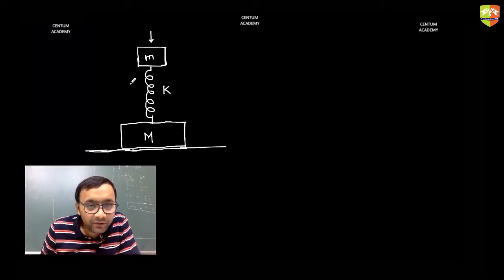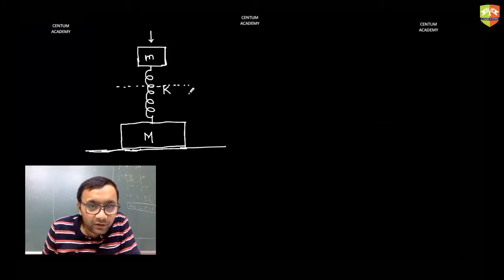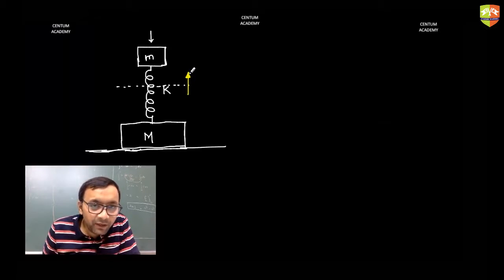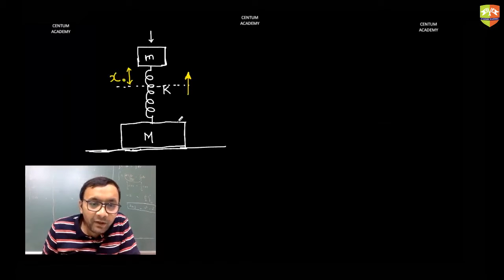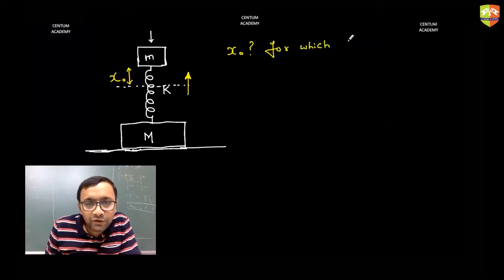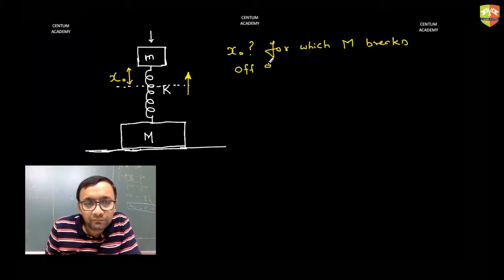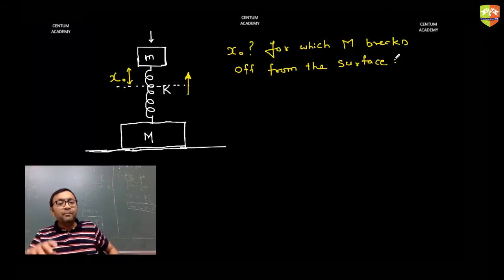When you compress the spring and release it, this block will try to move up because of the spring force. When it moves up, the spring may get extended also. You need to find how much initial compression x0 is needed so that capital M can break off from the surface — meaning capital M leaves or jumps off the surface.